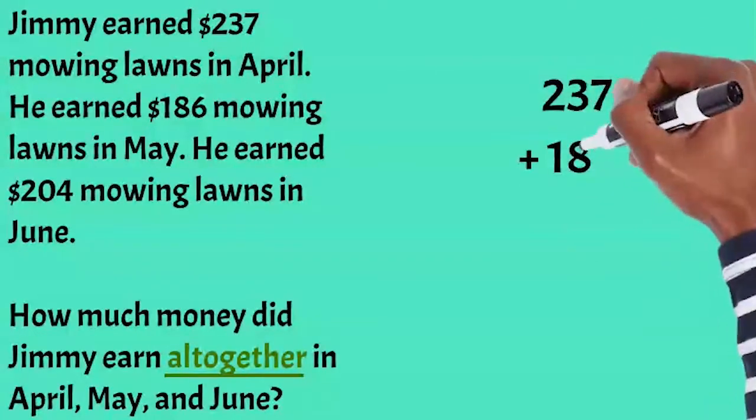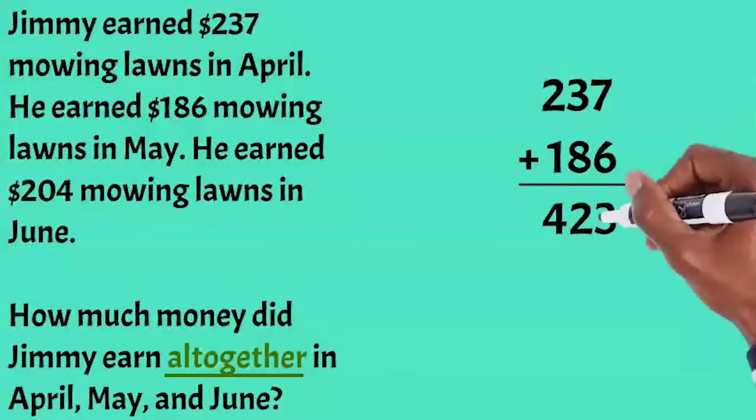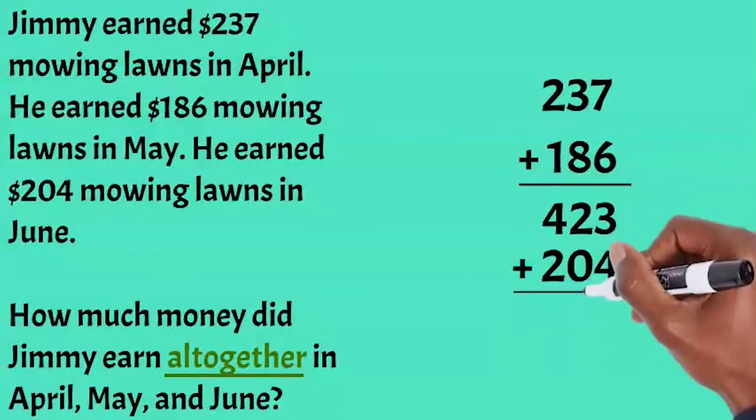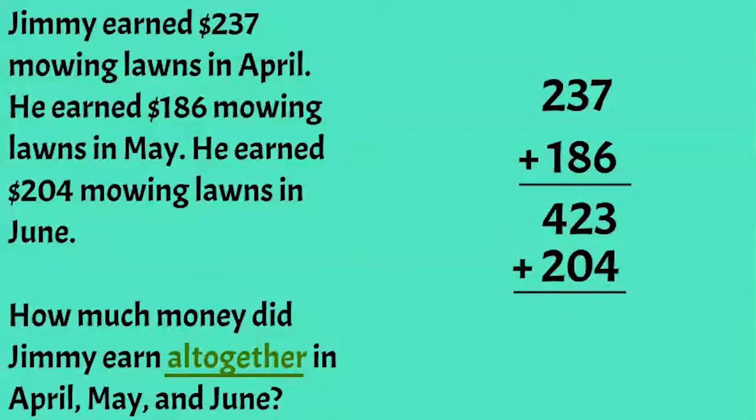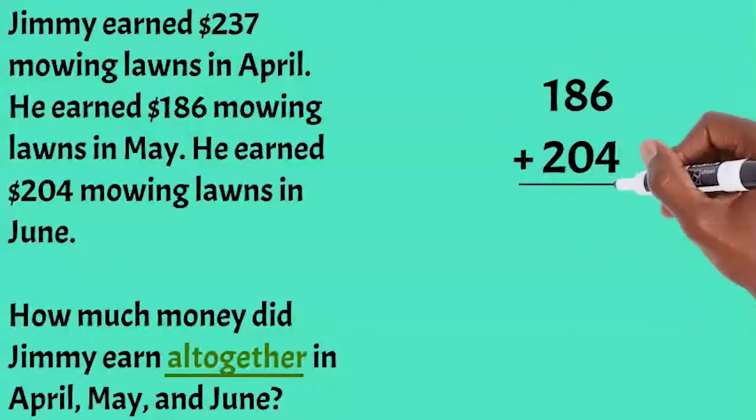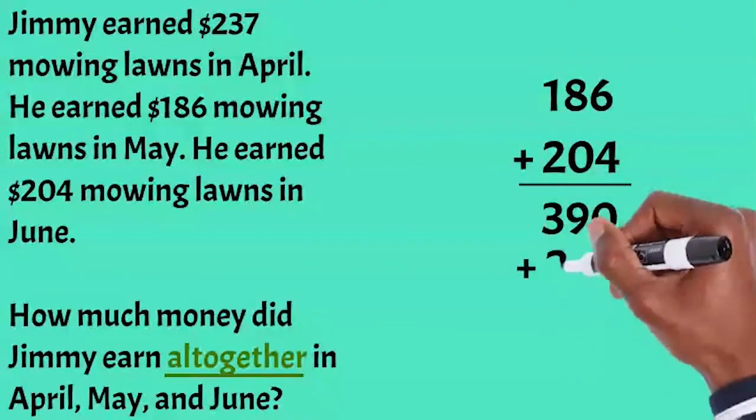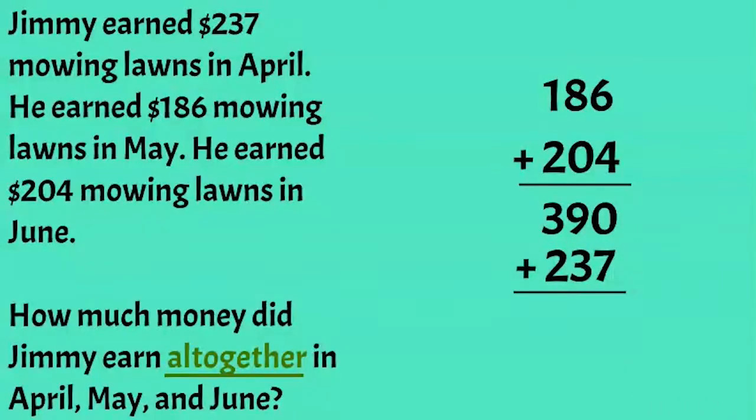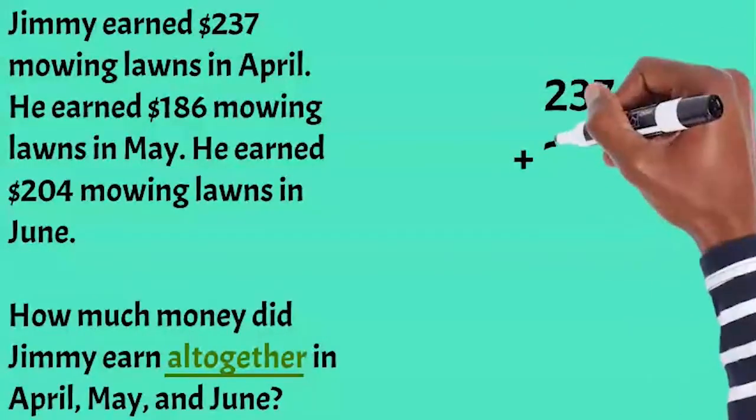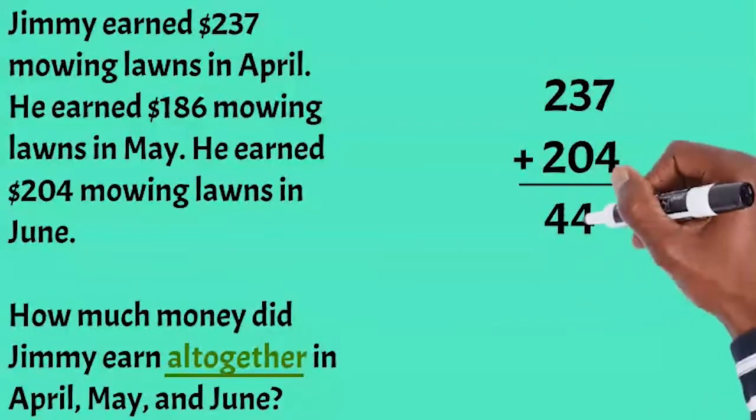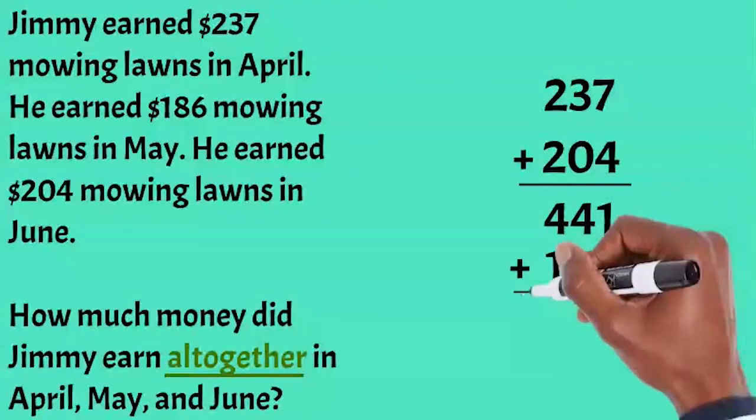So we can add 237 plus 186, then add 204 to that sum. Or we can add 186 plus 204, then add 237 to that sum. We could also add 237 plus 204, then add 186 to that sum.